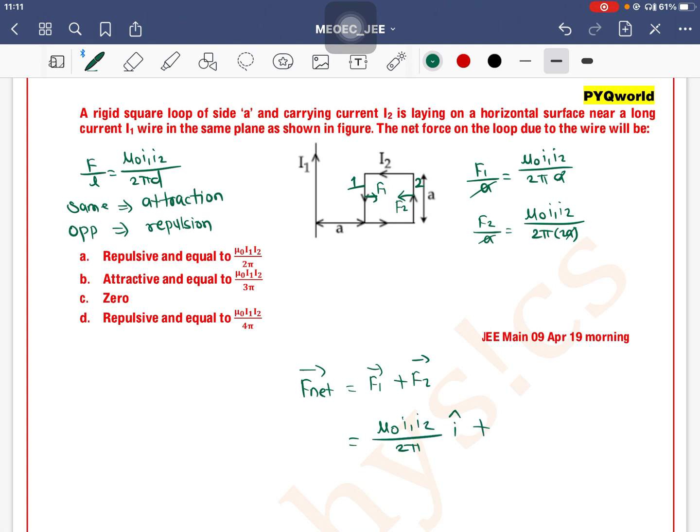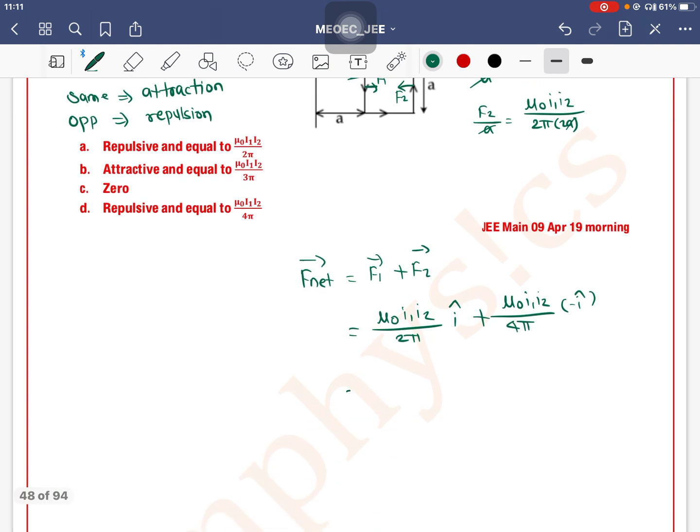Taking mu0 I1 I2 divided by 2 pi a as common, we get 1 minus 1/2, and i cap also comes out. 1 minus 1/2 equals 1/2, so this becomes mu0 I1 I2 divided by 4 pi a in the i cap direction.